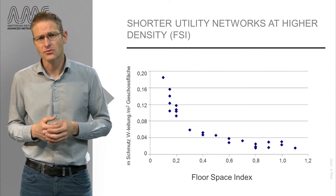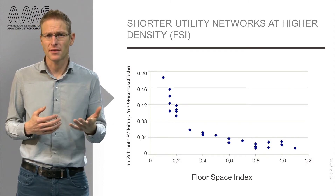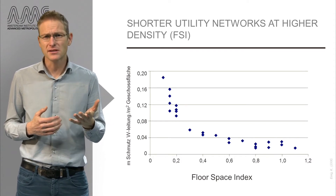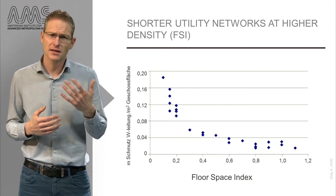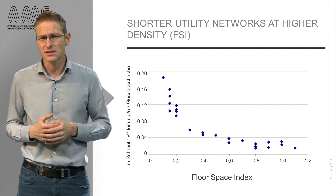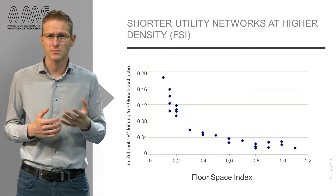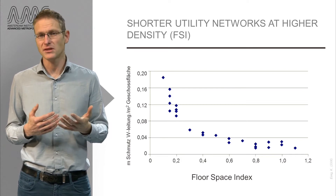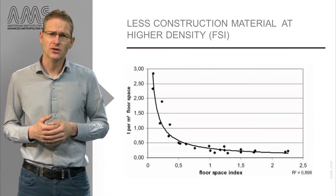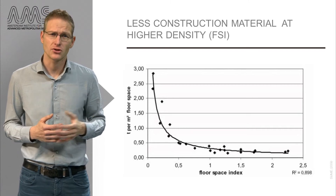Other infrastructure can also be built much more efficiently in cities rather than in rural surroundings. For instance, the costs and the material used for sewers and water pipes reduces as density, here measured as floor space index, increases. As well as the construction material per floor area, as shown here.